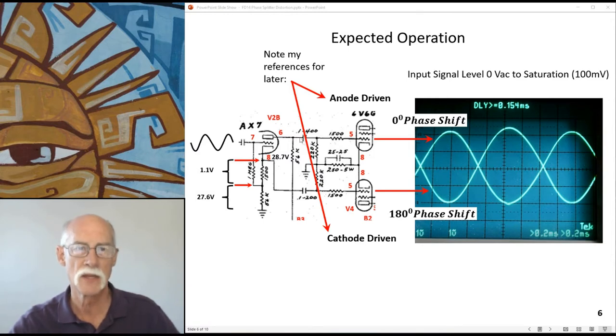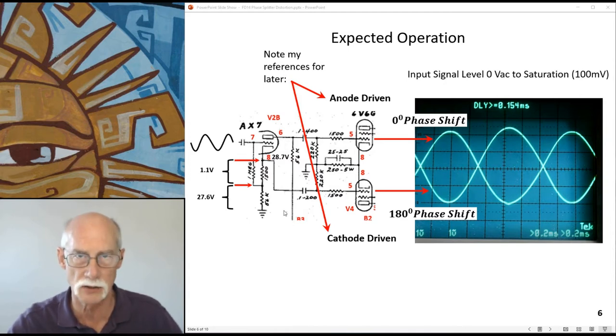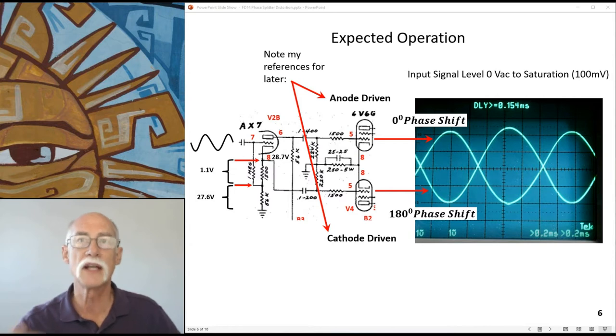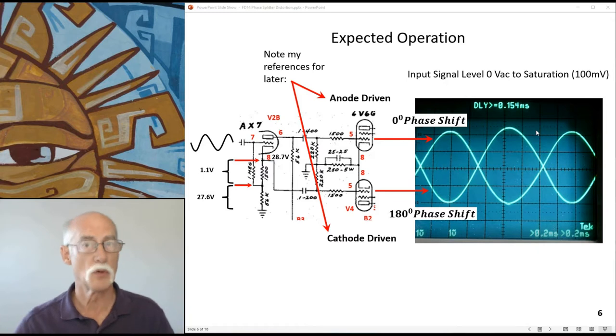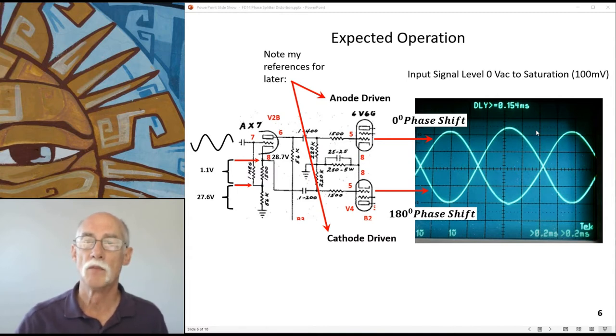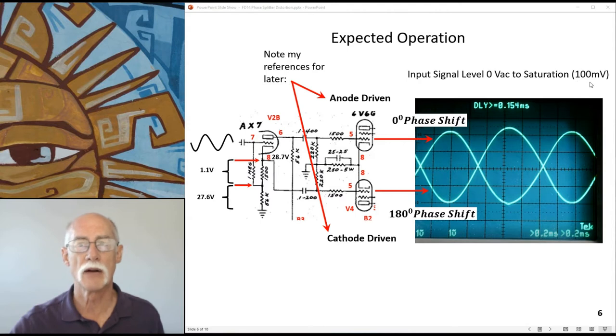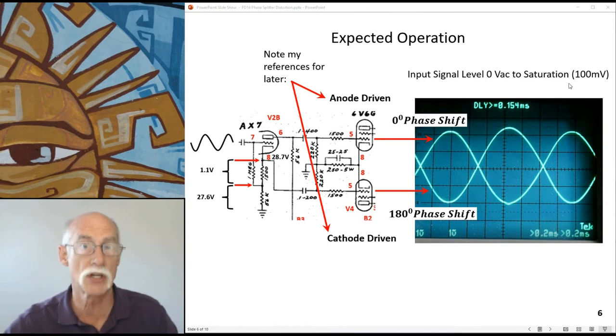The phase splitter load on both the plate and the cathode have to be identical. If the loading is identical, which is set by these resistors 220K here and here, then you should expect both the anode and cathode signal to be the same amplitude and 180 degrees out of phase with one another. This only exists up until you hit the saturation limit, which is around 100 millivolts generally, but for this particular amp I have, it's 90 millivolts.